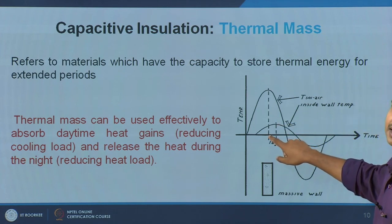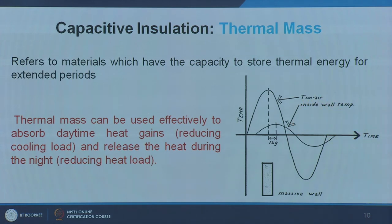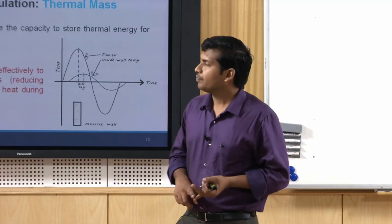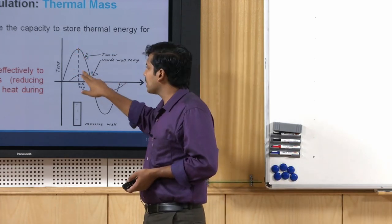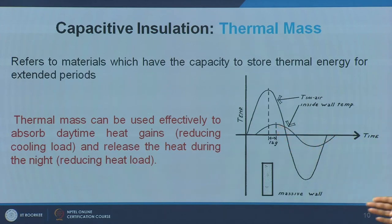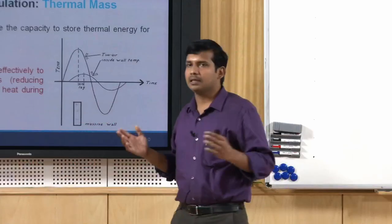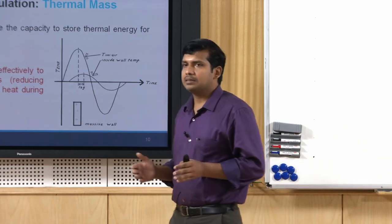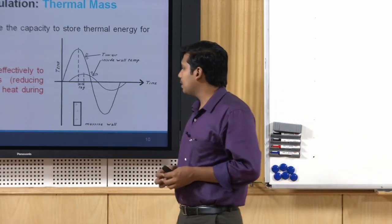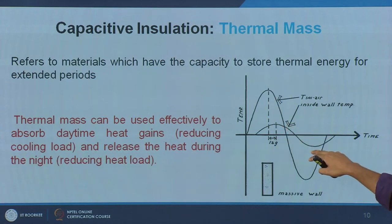The major parameter we look at based on capacitive insulation is time lag — how much time it takes for the indoor maximum to occur compared to the outdoor maximum. For example, if the outside peak occurs at 2 o'clock in the afternoon, the inside peak may happen 1.5 to 2 hours later for thinner walls, or as much as 4 to 5 hours for a thick adobe wall. However, the same effect also occurs at nighttime — it may be advantageous in some cases and disadvantageous in others.